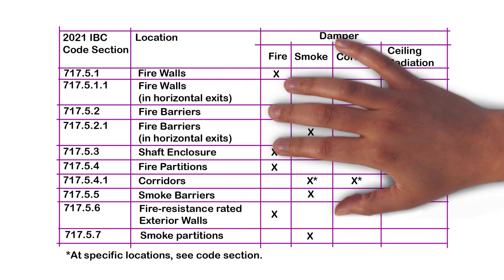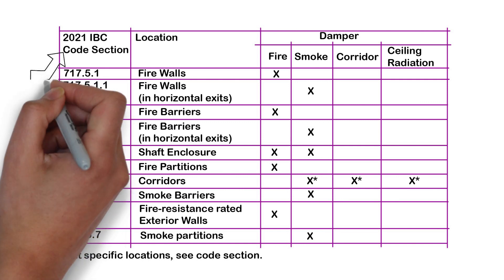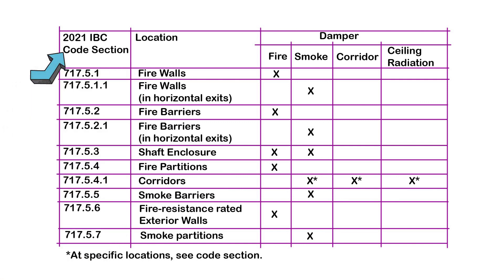So here is a table. On the left hand side column, you can see the section that requires it based on the 2021 IBC. Then the second column notes the types of walls that may need a damper. The other remaining columns will let you know what type of damper you need, a fire damper, smoke damper, or both. Note that this is outside the topic that we're touching on, but there are also corridor dampers and ceiling radiation dampers. If you want to know more about these dampers, just look at the code sections noted.